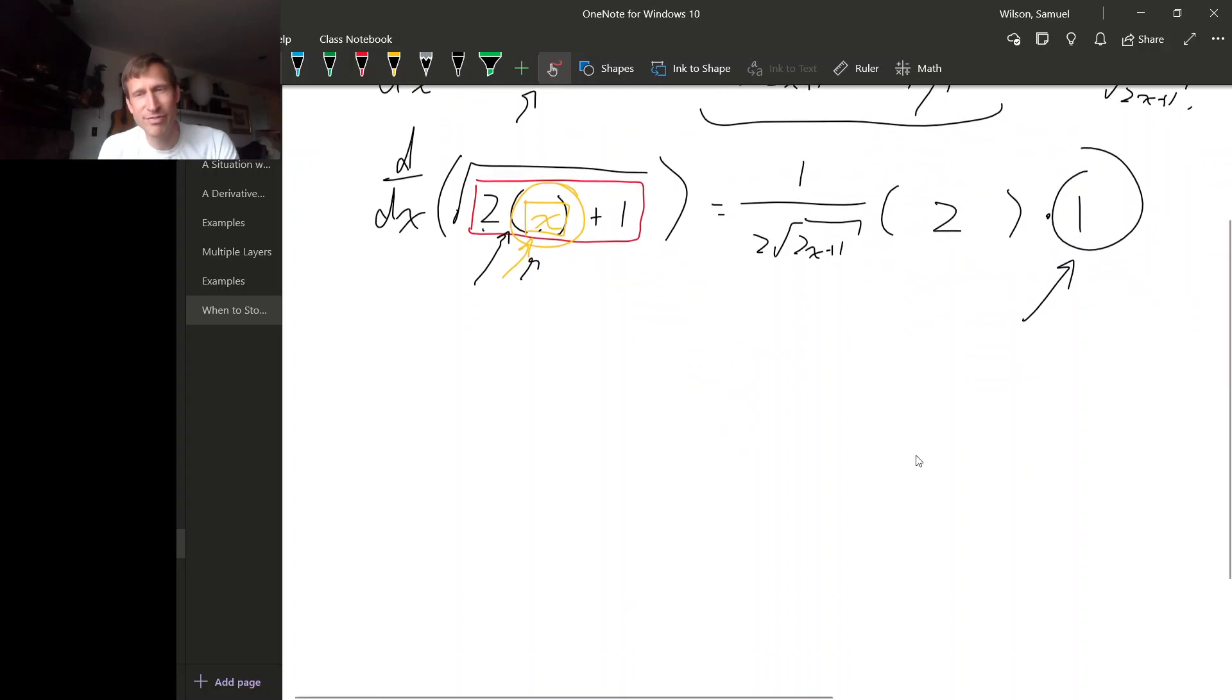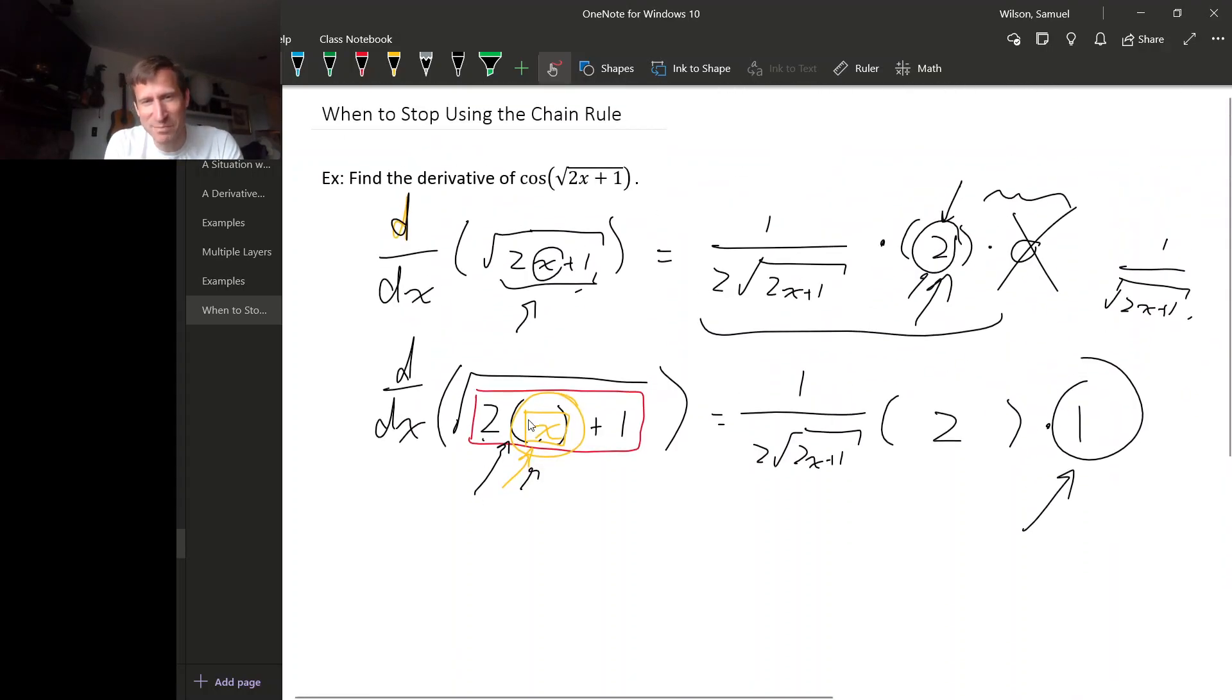And the reason that makes sense is because there's actually as many layers of parentheses in here as you want, and each layer of parentheses is like another layer of times 1. But having extra times 1s, those don't change anything.